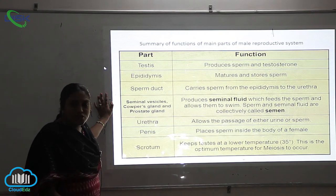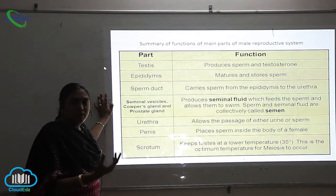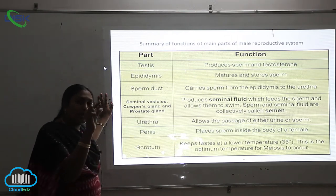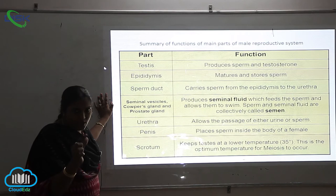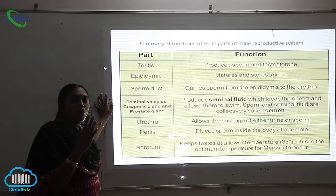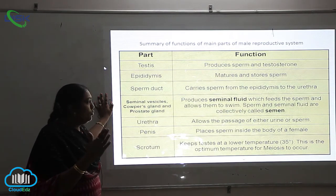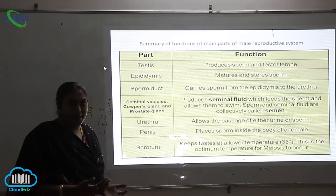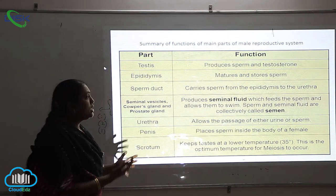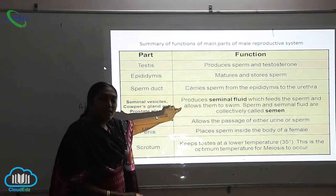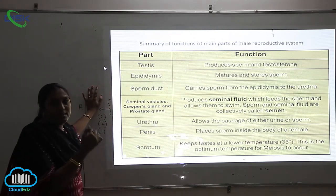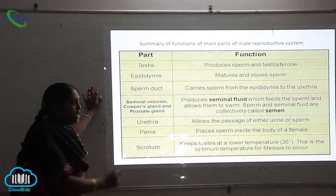How does the sperm swim? It doesn't have fins like fishes. We will see the structure of the sperm — the different parts and how it is able to move, which we call motility. It has a flagellum, a whip-like structure, and with that part the sperm will swim. The seminal fluid is the lubricating fluid which lodges all the sperms in it. The sperms and the seminal fluid together are collectively called semen.